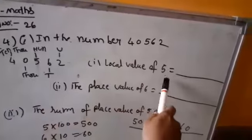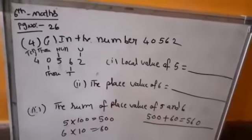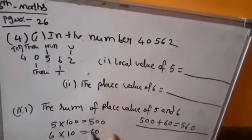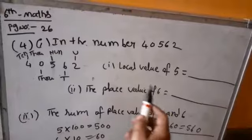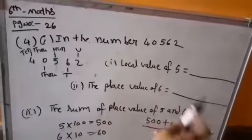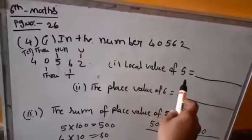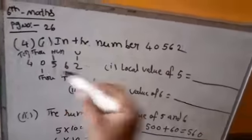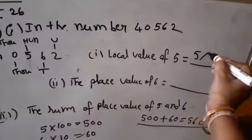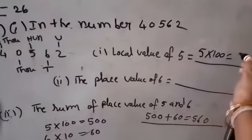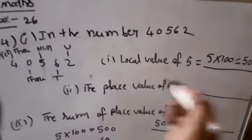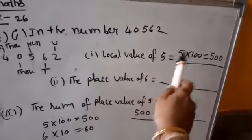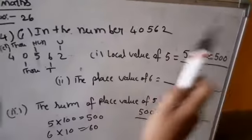First question: local value of 5. As I said in the first video, place value and local value are both the same. Local value of 5 — 5 is in the hundreds place. So 5 into 100 equals 500. The local value of 5 is 500.